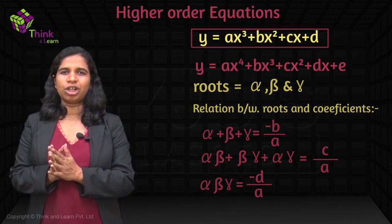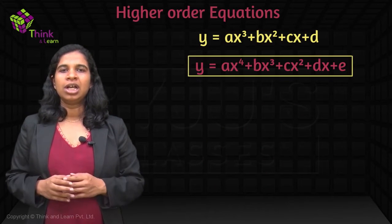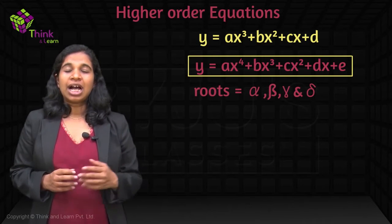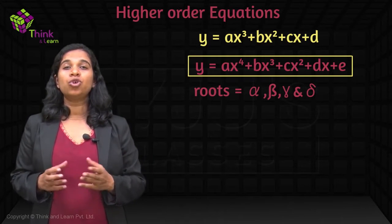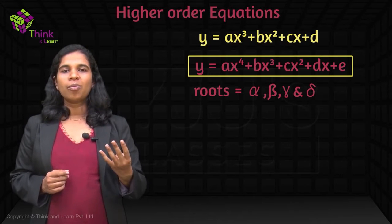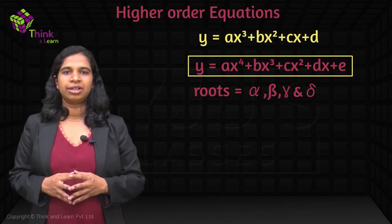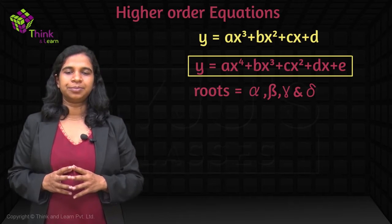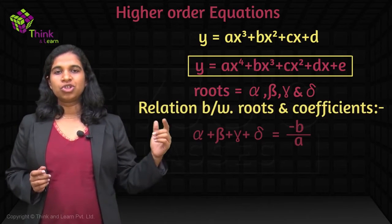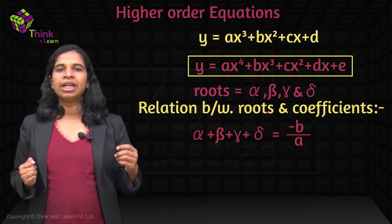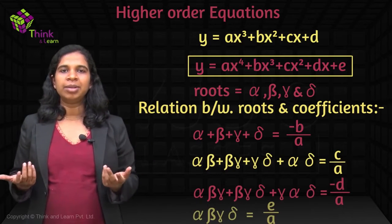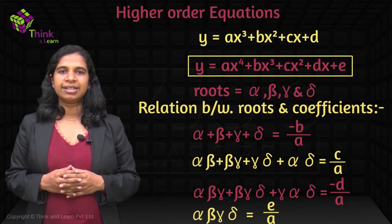The same thing applies for a biquadratic as well. A biquadratic has 4 roots: alpha, beta, gamma, and delta. Again, some of these could be complex, so you could have either 2 complex roots, 4 complex roots, or 0 complex roots — always occurring in pairs. The same relationship holds: roots taken 1 at a time is minus B by A, 2 at a time is C by A, 3 at a time is minus D by A, and 4 at a time is E by A.